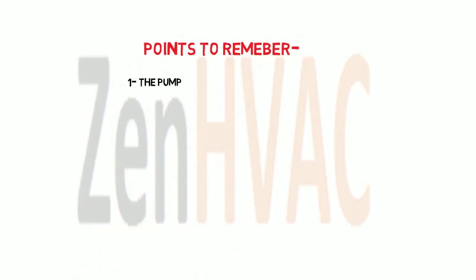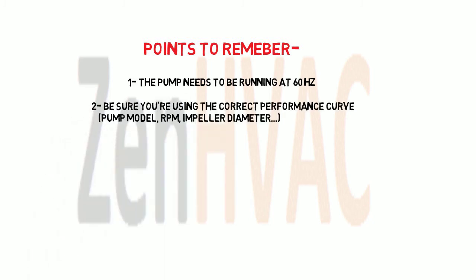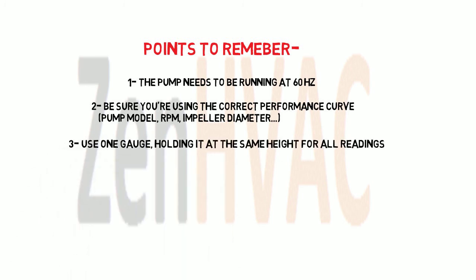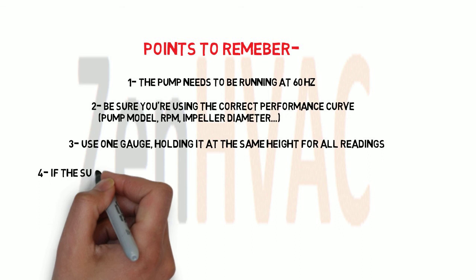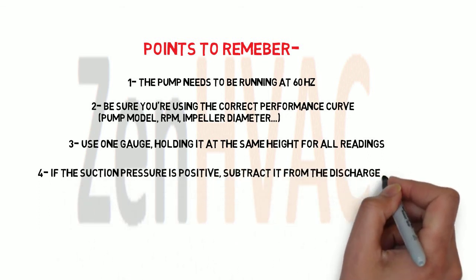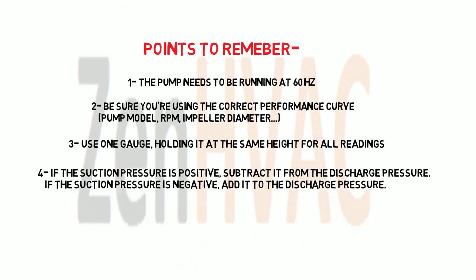Points to remember: One — the pump needs to be running at 60 Hz; if it's got a drive, it's got to be up to full speed, and all valves need to be open. Two — be sure you're using the correct curve for the pump, meaning RPM, impeller diameter, and manufacturer. Three — use one gauge for both readings, holding the gauge at the same height for both readings. Four — if the suction pressure is positive, subtract it from the discharge; if the suction pressure is negative, add it to the discharge. That's it.